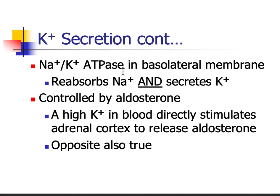How much potassium secretion occurs is controlled by aldosterone. A high potassium level in the blood directly stimulates the adrenal cortex to release aldosterone — you don't need the whole renin system for that. Potassium directly stimulates aldosterone release, and of course the opposite is true: if potassium is too low, it suppresses aldosterone.